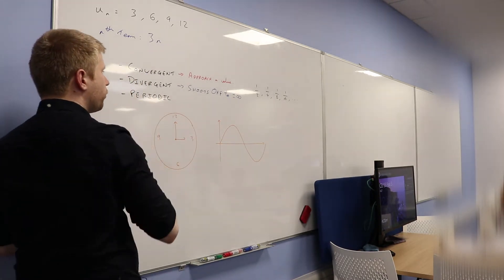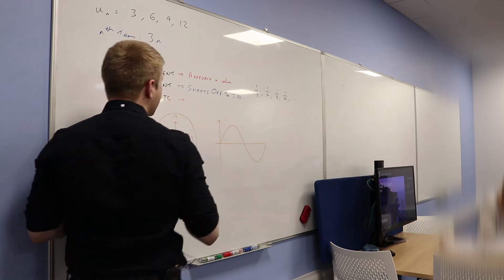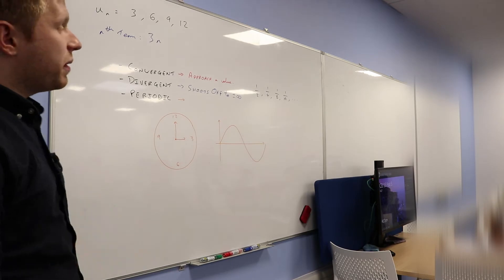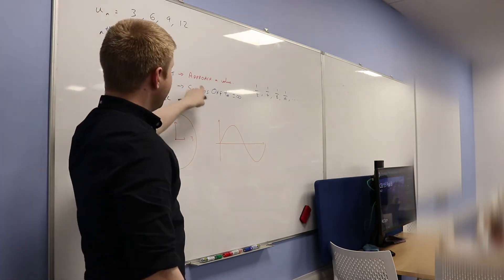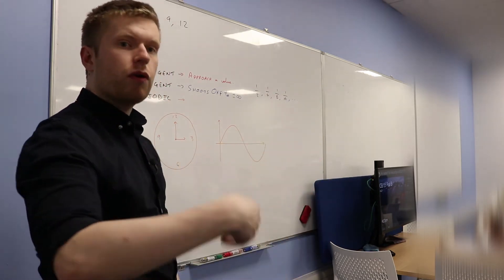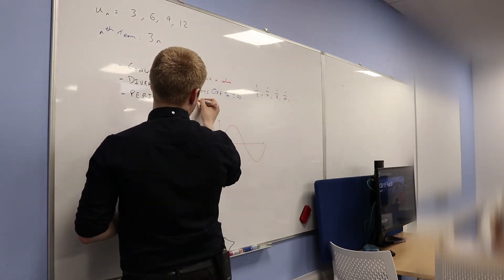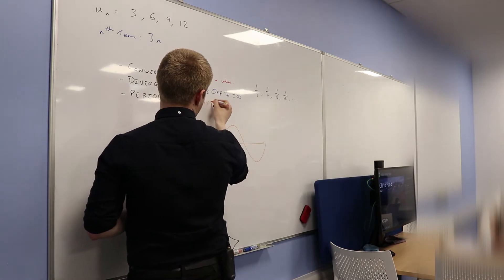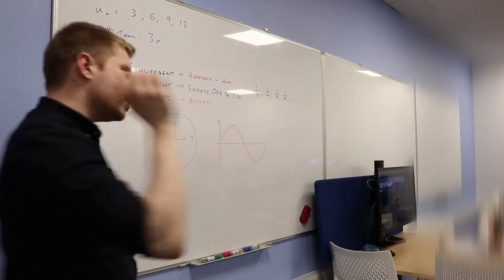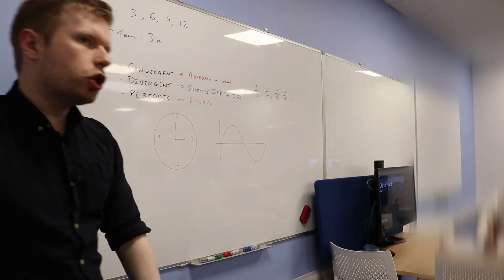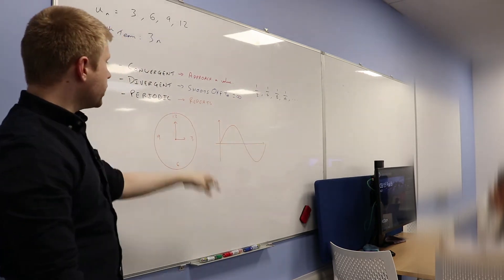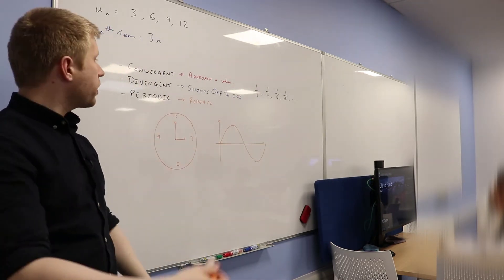So now then, could you define what does periodic actually mean? I guess a good way of describing it, it doesn't approach anything. It doesn't shoot off to infinity. It just goes over and over and over and over again. So it repeats itself. So convergent means it approaches some particular value. Divergent means it shoots off to plus or minus infinity. It gets really big or really small. Periodic just means it just goes over and over and over again.